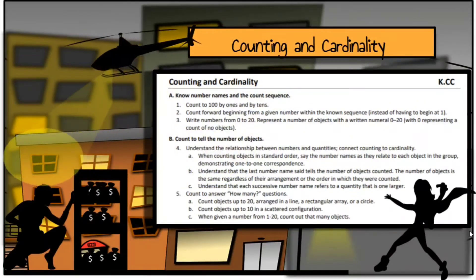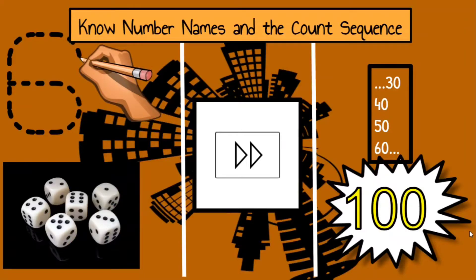To begin, I'm going to explain the math standards for counting and cardinality. Knowing number names and count sequence and counting to tell a number of objects means different things, and I'm going to explain what these mean in just a few moments. You can look these up in your State Department of Education's website as well.